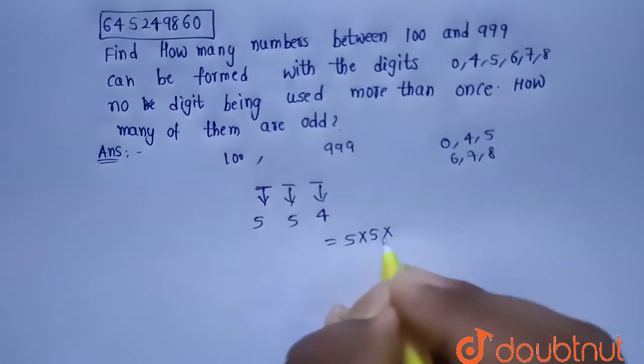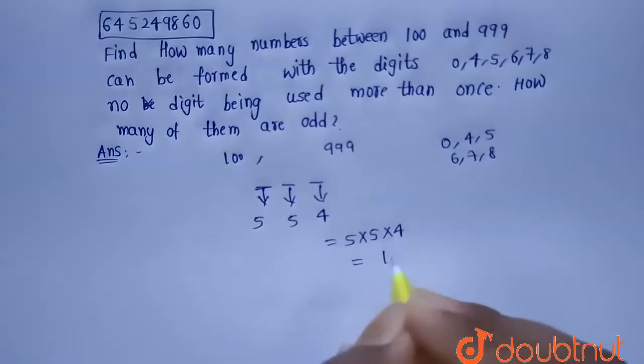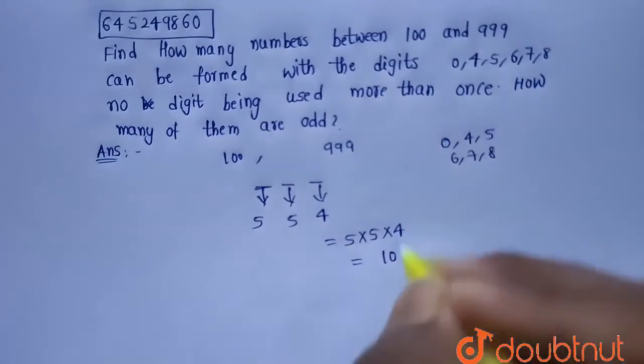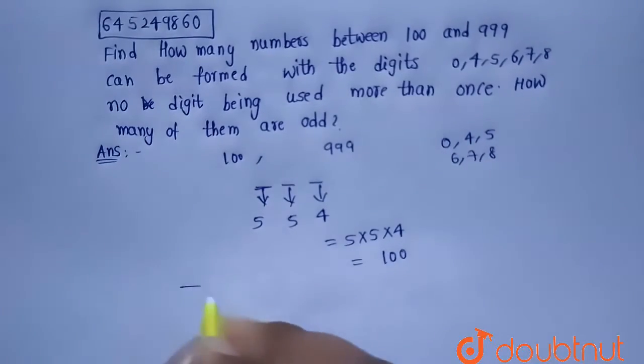So the total numbers are 5 × 5 × 4, that is nothing but 100. Now we are asked to find how many of these hundred numbers are odd. So let's find them out.